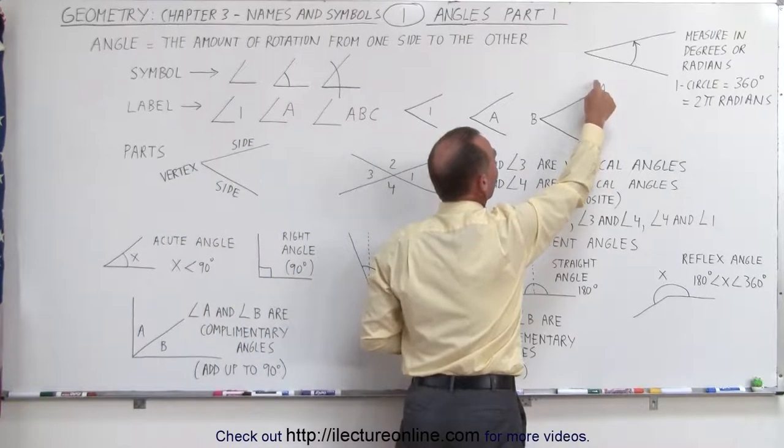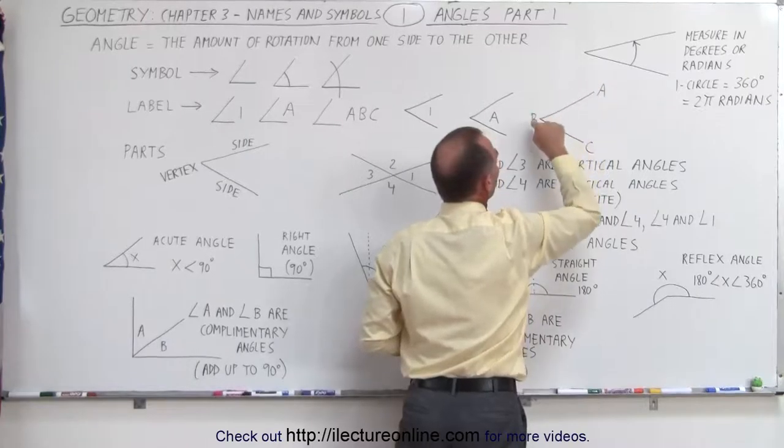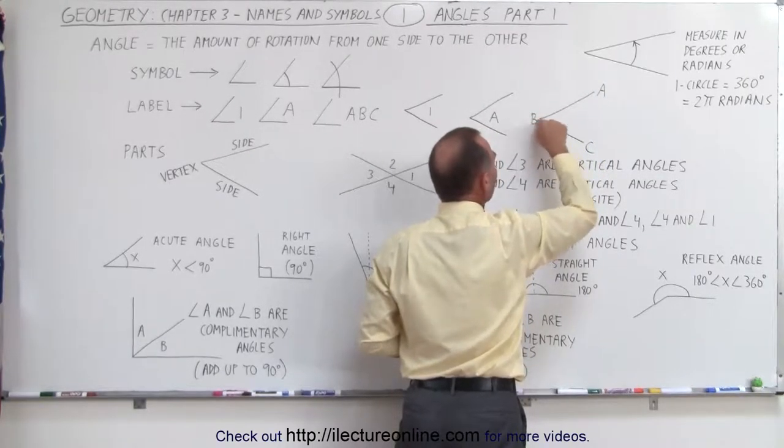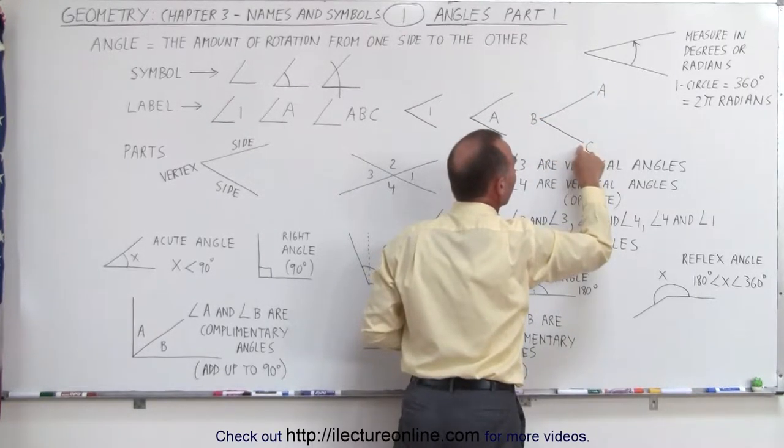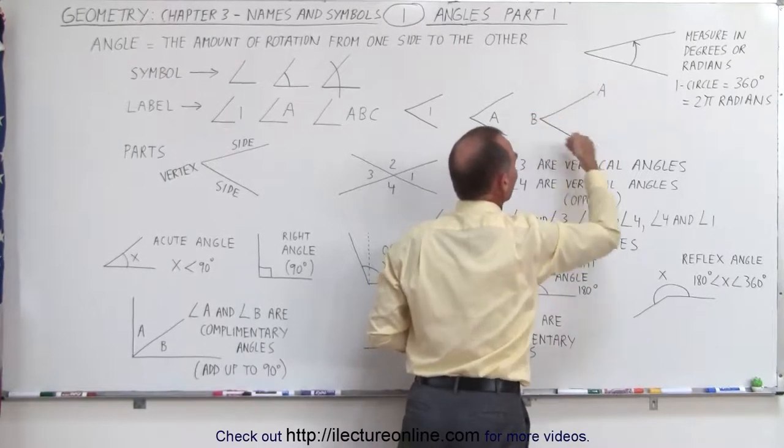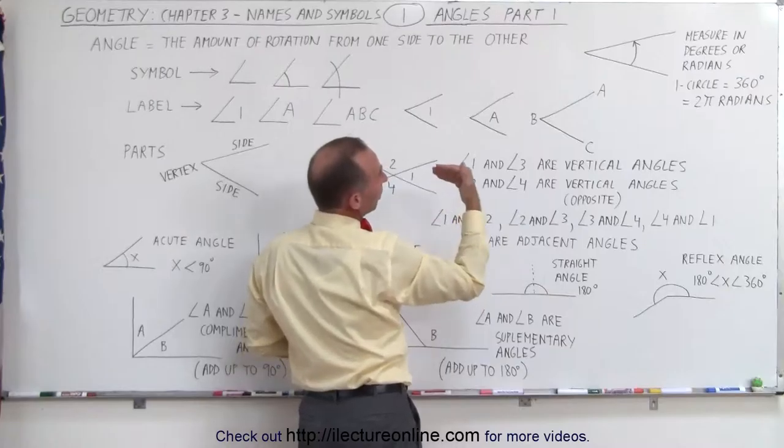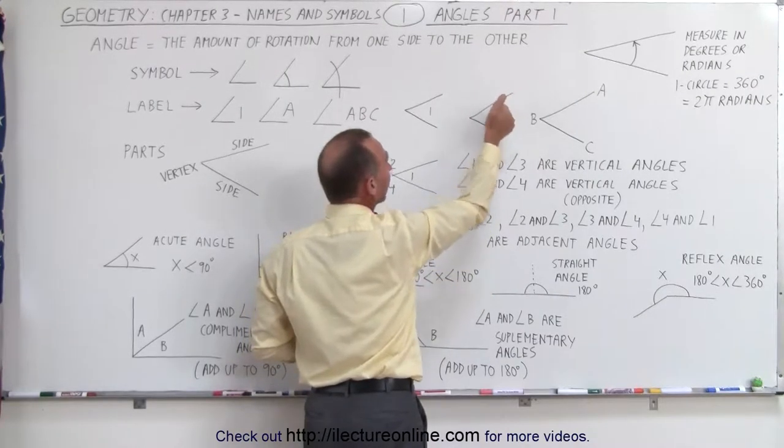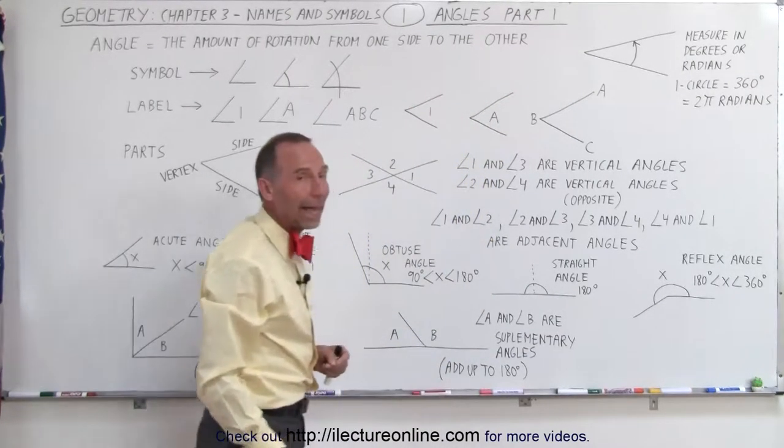We start from the tip or the far end of the first side to the vertex, which we call the next letter, then to the far end of the second side. So the angle ABC is sometimes expressed like this. Or we simply put a letter in there called angle A or a number in there called angle 1.